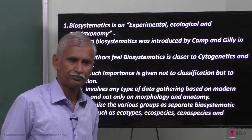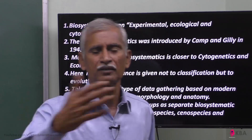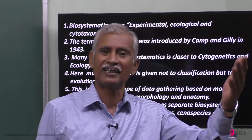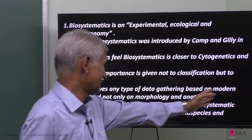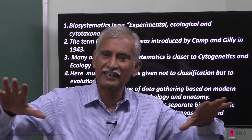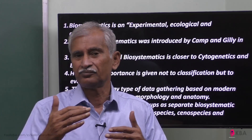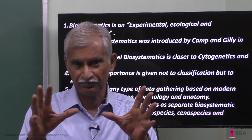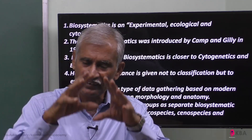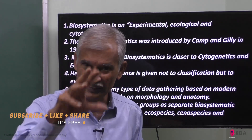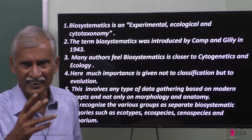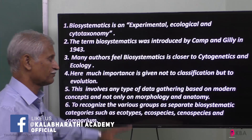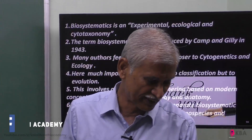Eco-species and eco-type differ. Animals migrate thousands of miles — 5,000 or even 10,000 miles — so there is variation due to adaptation. There is genetic recombination among closely related species. That species is reproductively isolated, yet can produce a fertile offspring. These two groups are called senospecies. With this, we complete this discussion. Thank you, students.